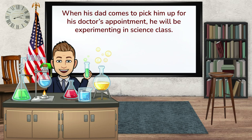When his dad comes to pick him up for his doctor's appointment, he will be experimenting in science class. 'Will be experimenting' is the verb tense being used here. The shorter action is his dad coming to pick him up — that's just his dad showing up at school. Before that happens, he'll be in science class. As that happens, he'll be in science class. And after that happens, he'll be in science class until he's called down to get picked up.